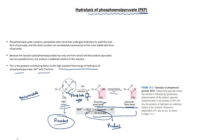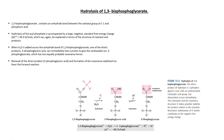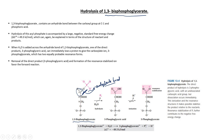Next is the hydrolysis of 1,3-bisphosphoglycerate. 1,3-bisphosphoglycerate is also an intermediate of the glycolytic pathway. This is the structure of 1,3-bisphosphoglycerate. It contains an anhydride bond — this is the anhydride bond — which exists between the carboxylic group and phosphoric acid.